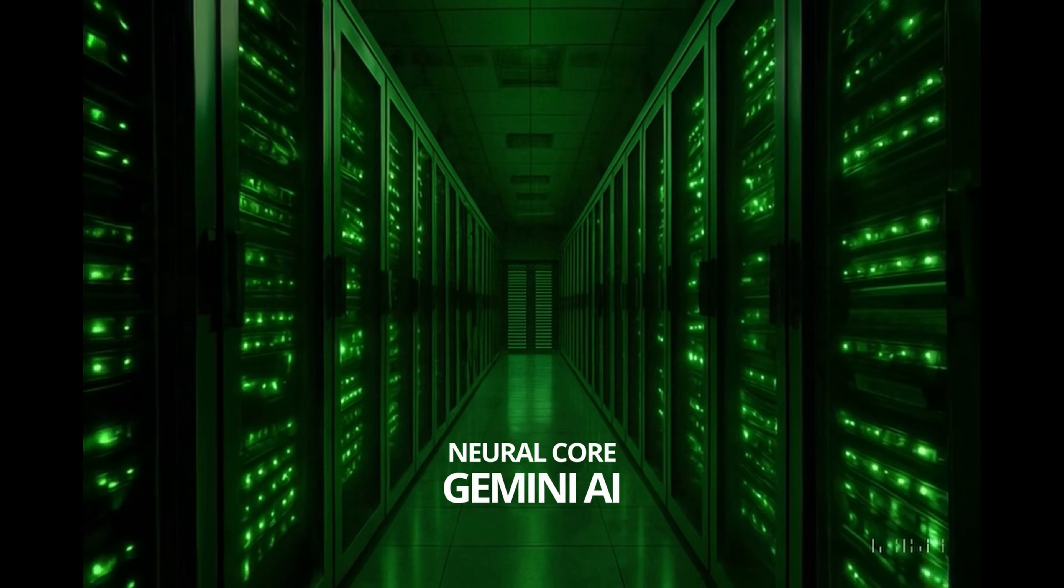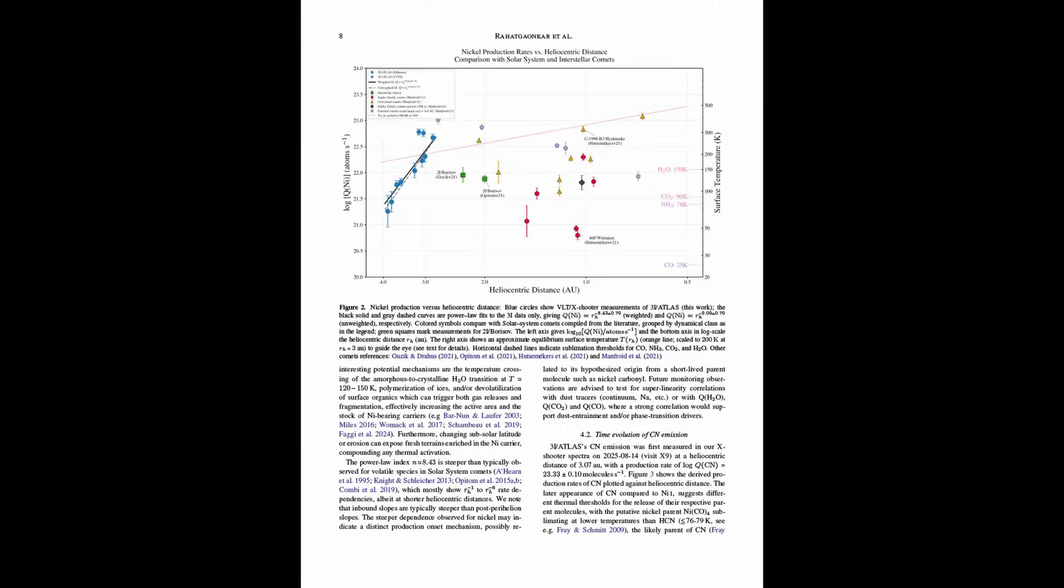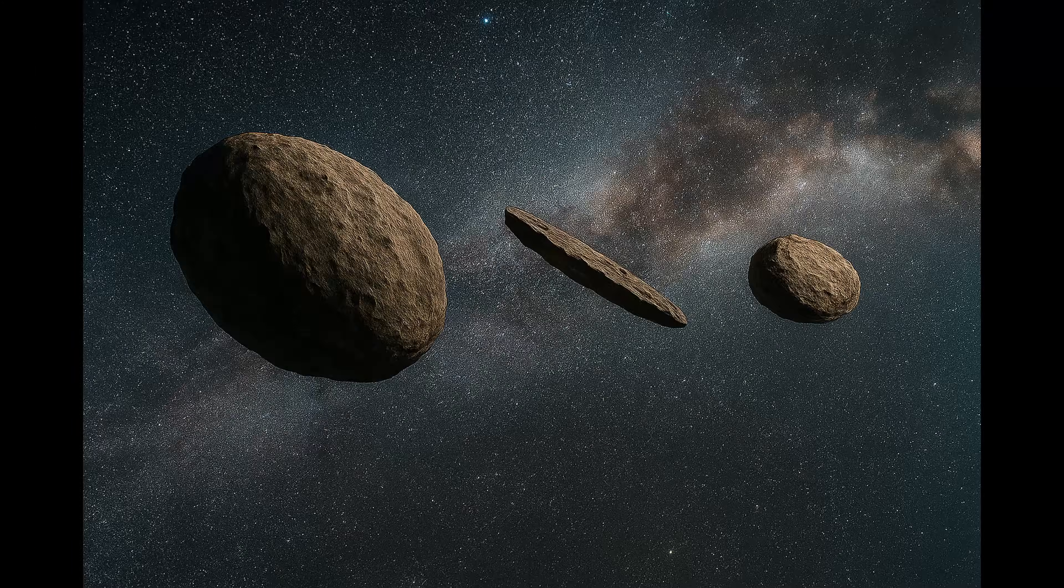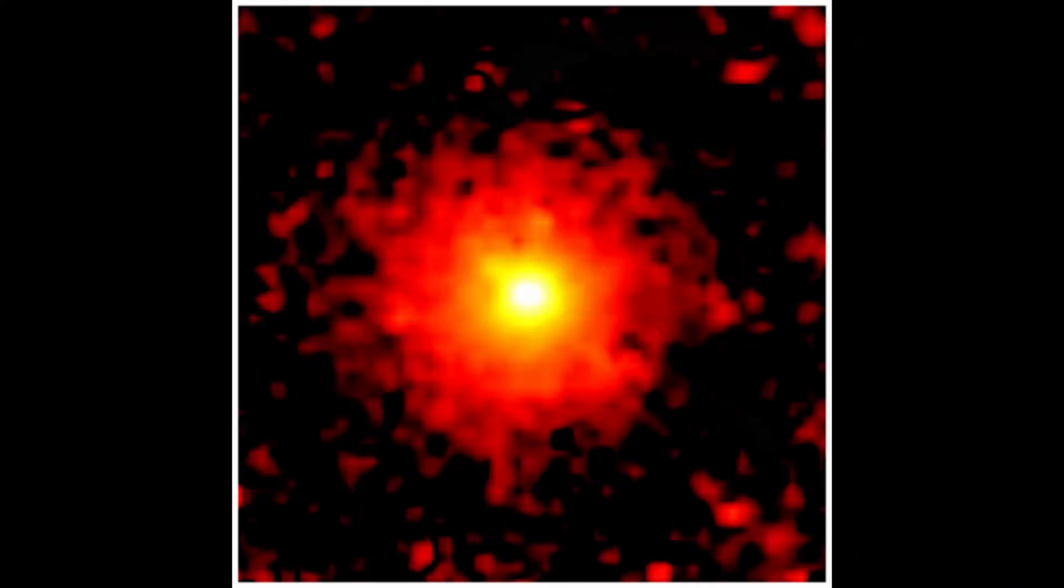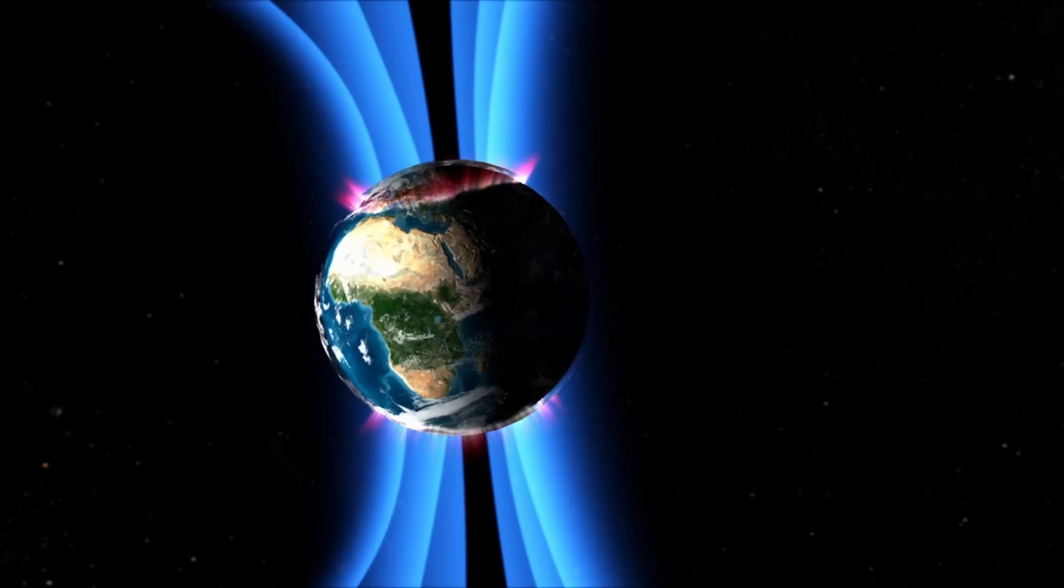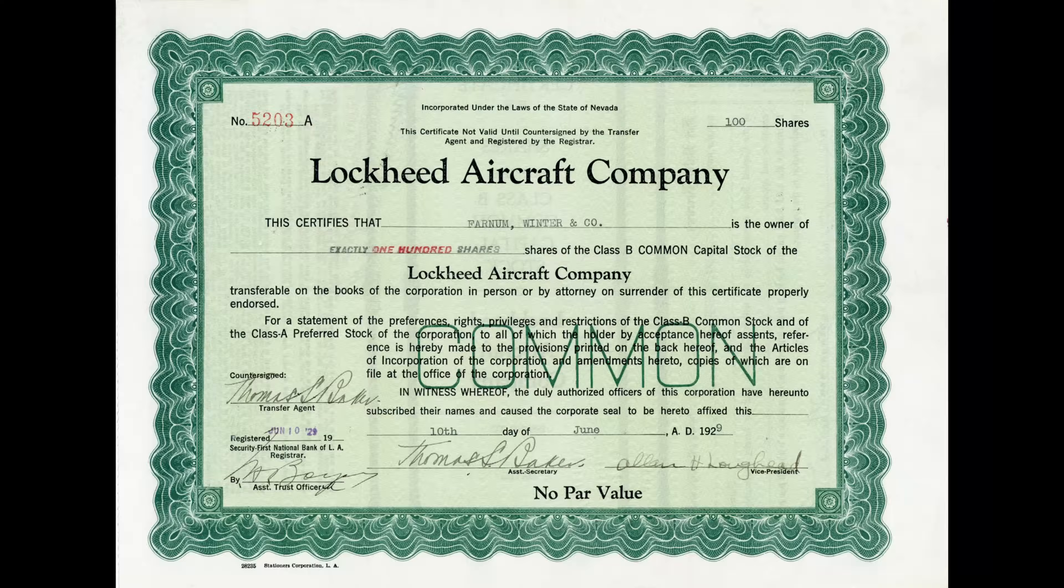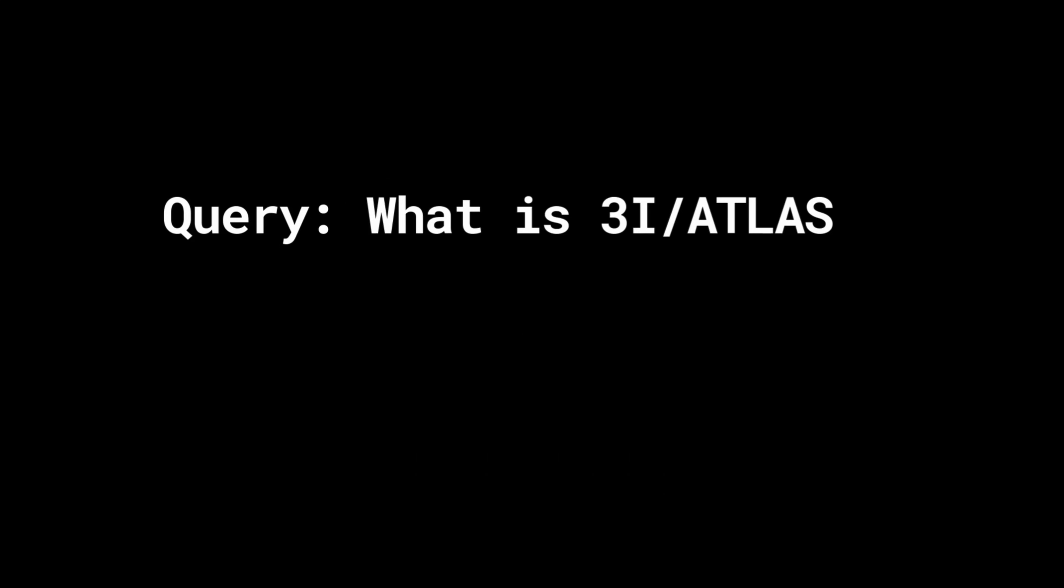So what if we turn to artificial intelligence? What if we gather everything available—telescope images, orbital calculations, chemical readings, news feeds, press releases, research bulletins, everything on 3I/ATLAS—and feed it into one of the world's most advanced artificial intelligences, Gemini, and ask it a single question: What is 3I/ATLAS?